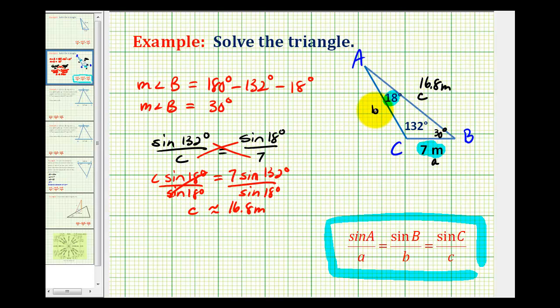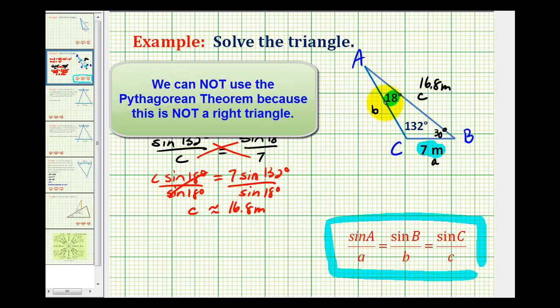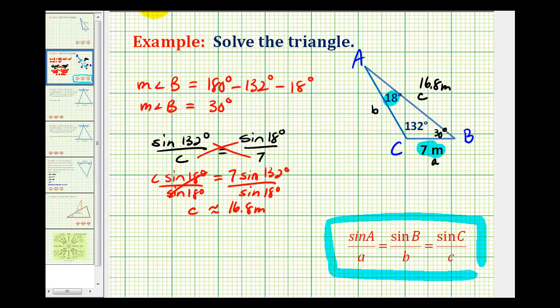And now we're left to determine the length of side B. So we'll go ahead and set up a similar proportion. But since we want to determine the length of side B, we're going to have the sine of angle B divided by the length of side B, or sine 30 degrees divided by B must equal, let's go ahead and use the same ratio of sine 18 degrees divided by 7.